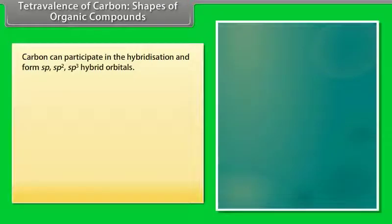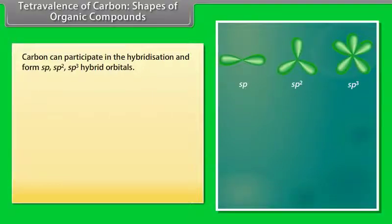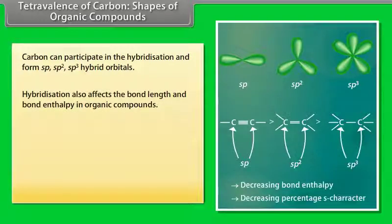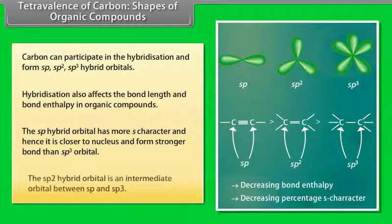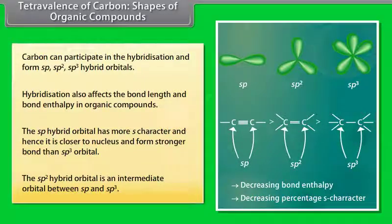Carbon can form sp, sp2, and sp3 hybrid orbitals. Hybridization also affects the bond length and bond enthalpy in organic compounds. The sp hybrid orbital has more s-character and is closer to the nucleus, forming stronger bonds than sp3 orbitals. The sp2 hybrid orbital is an intermediate between sp and sp3.